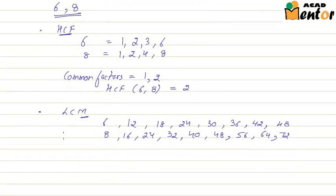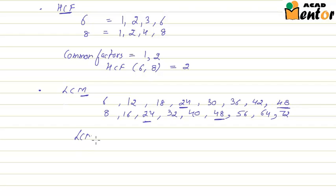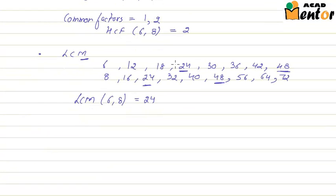Let's find the common multiples. The first common multiple between 6 and 8 is 24. The next common multiple is 48. If we keep going, we will have an infinite number of such common multiples, but we have to take only the least. In this case, the least common multiple is 24, so the LCM of 6 and 8 is 24.